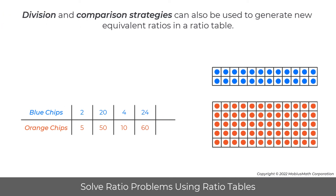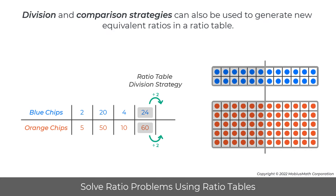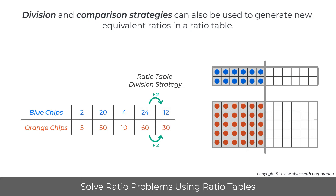Division and comparison strategies can also be used to generate new equivalent ratios in a ratio table. For example, both values in the ratio of 24 blue chips to 60 orange chips can be divided by two to get an equivalent ratio of 12 blue chips to 30 orange chips. Just like in previous ratio table strategies, this division strategy results in a new ratio, 12 blue chips to 30 orange chips, that maintains the original ratio.